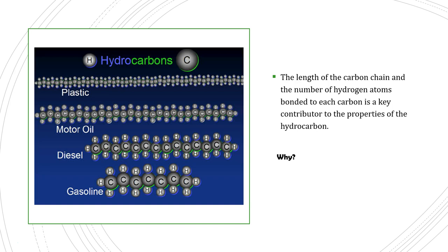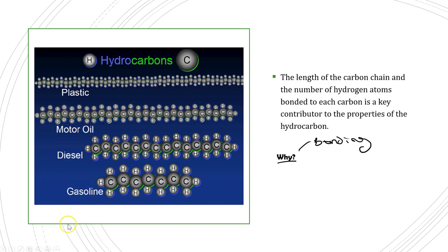The length of the carbon chain, the number of hydrogen atoms, and the type of bonding between them are key contributors to the properties of the hydrocarbon. Pause the video and think about why this is — think back to our bonding unit, and in particular what determines the melting point, boiling point, and physical characteristics of a covalent molecule. Once you've had a think, come back and I'll go through what I consider to be the most important aspect.